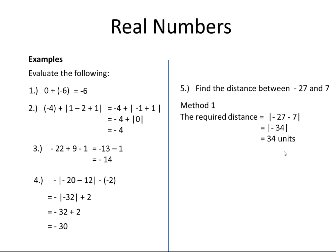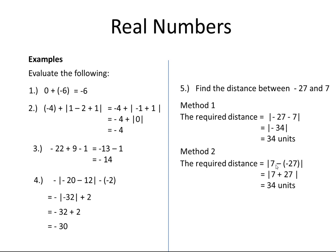In the second method, I am going to take the second number and subtract the first number — the opposite from method 1. So I take 7, write a subtraction sign, and the first number, which is minus 27. 7 minus minus 27: minus and minus becomes plus, and 7 plus 27 is equal to 34. This question doesn't say which method to use — you use the method that helps you get the correct answer. You can also draw the number line and count the distance from minus 27 to 7.